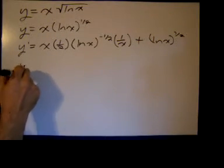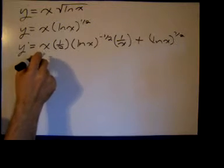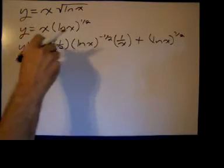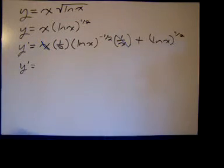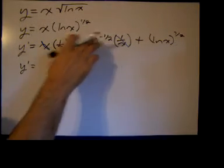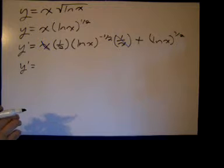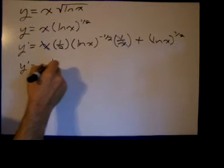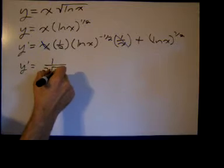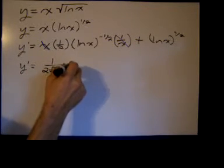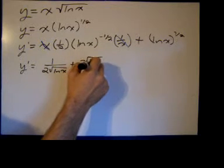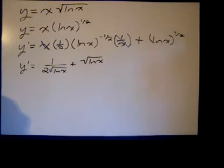So now, I can clean this up a little bit. x over x, well, those are just going to cancel, or, you know, they'll simplify out. And then I'll write, I'll put my powers of half back into root notation. And this expression will be 1 over 2 root ln of x plus the root of ln of x.